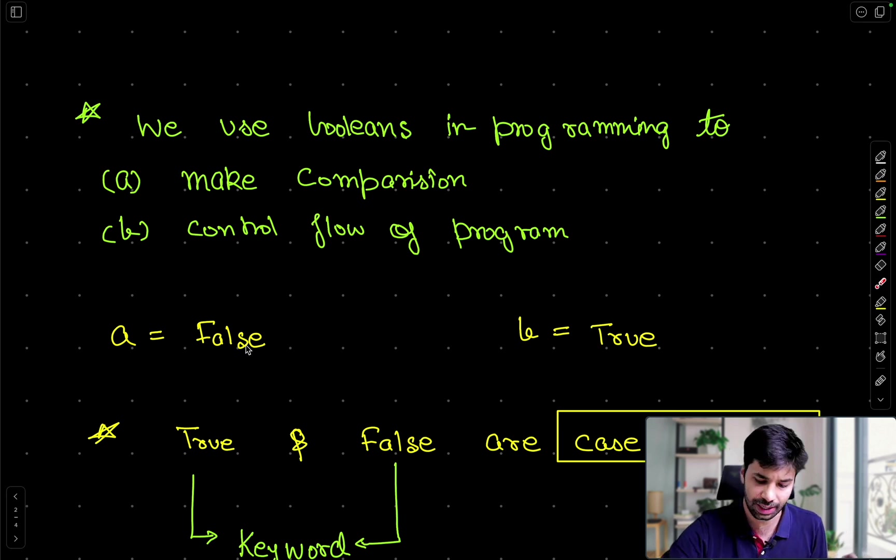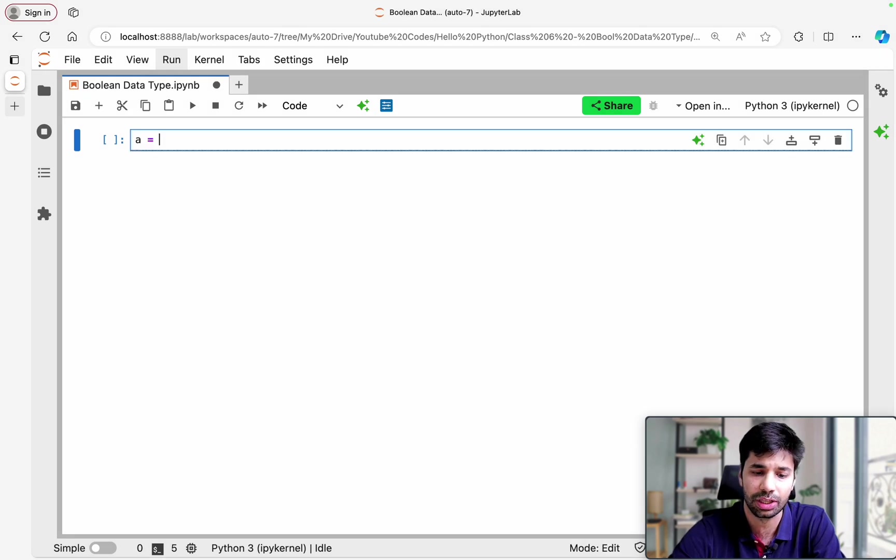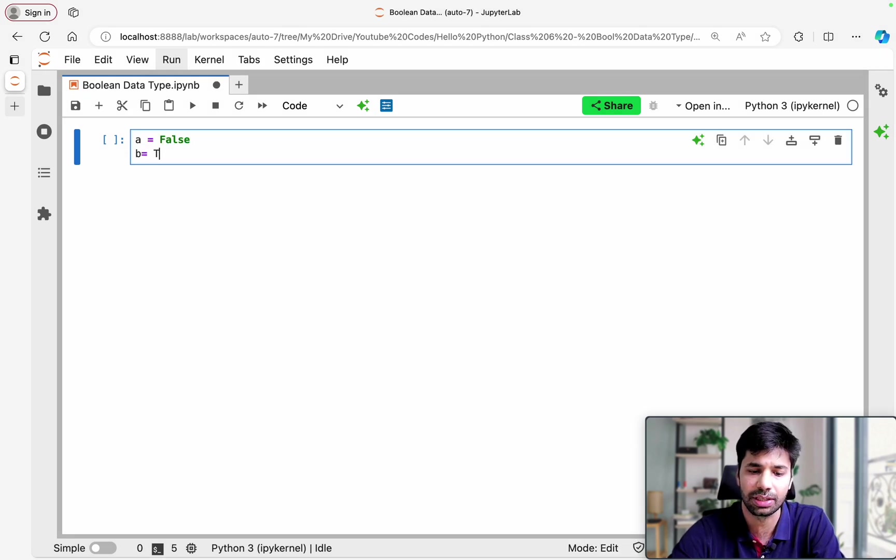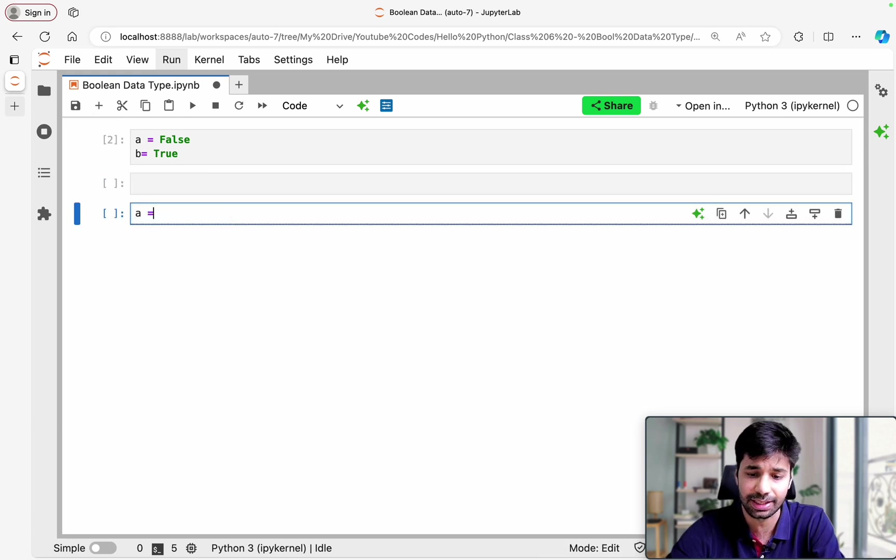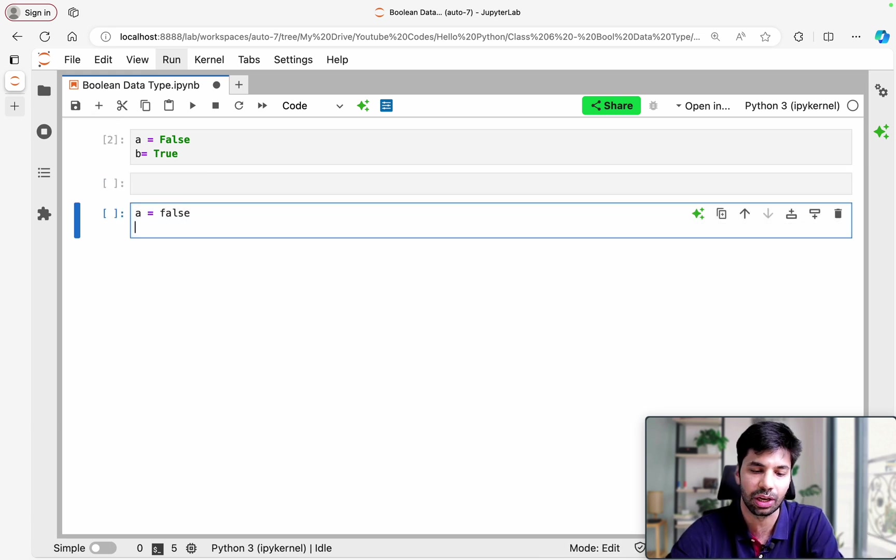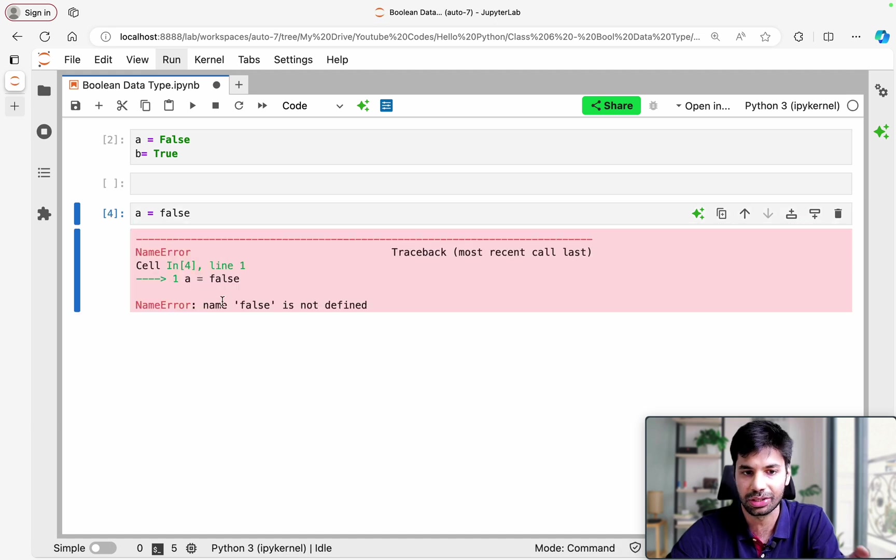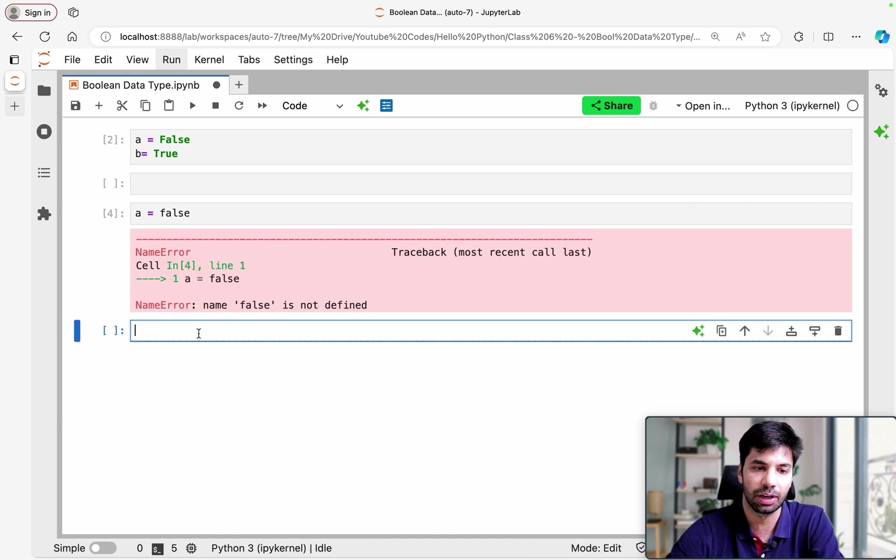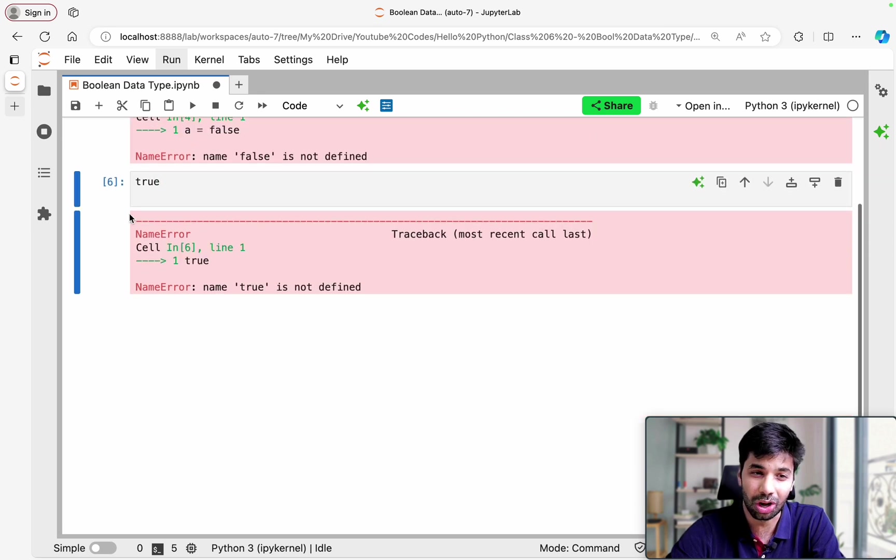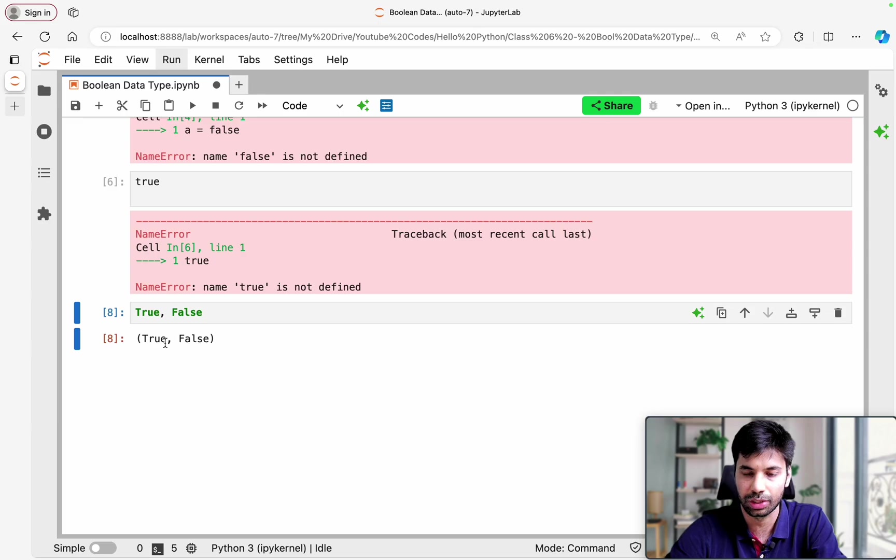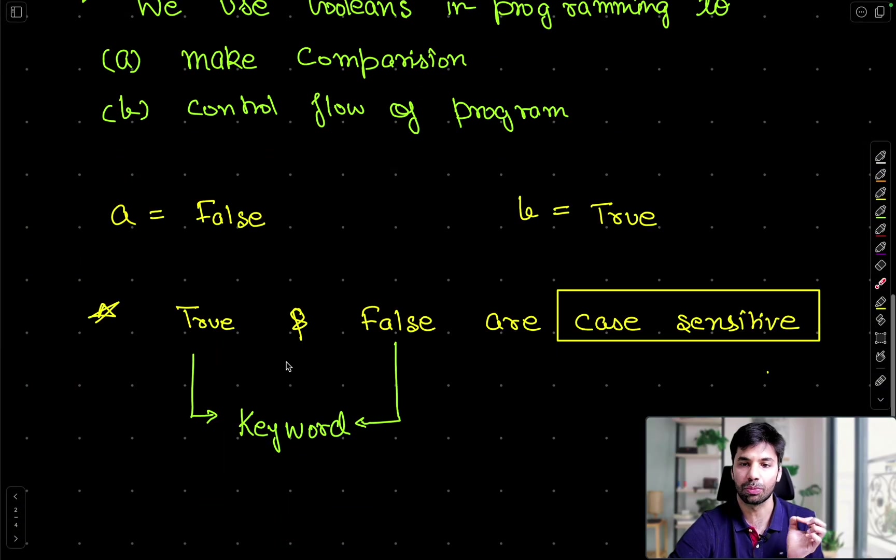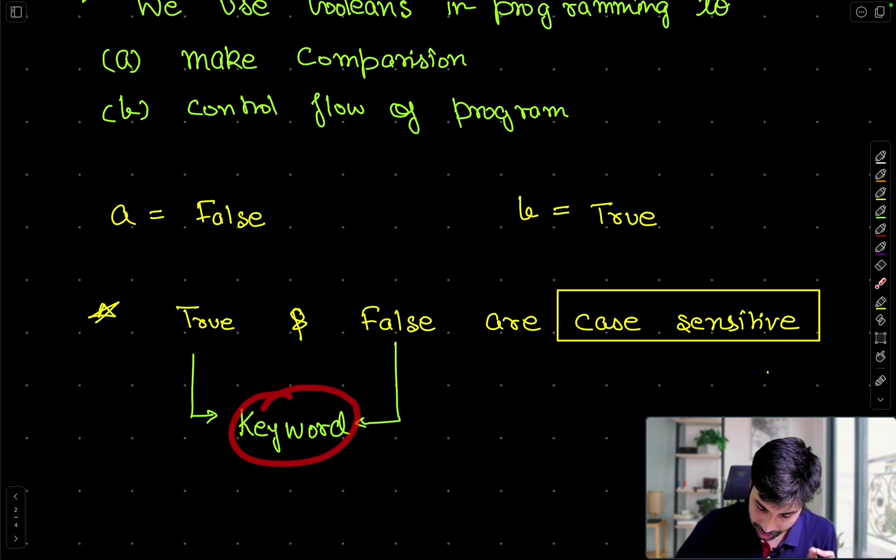Now bool, as I showed, can have just two values: false and true. Let's see the same in the code as well. A equals false and B equals true. Just one thing which you have to always remember is that they are case sensitive. So if you remember, they are keywords which we cannot use. So false with lowercase f is going to give you an error. In a similar way, true with lowercase t is also wrong. It's always capital T then true, and capital F then false.